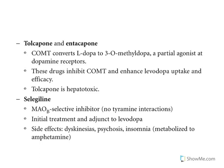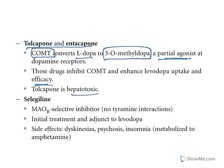Tolcapone and entacapone are both catechol-O-methyltransferase inhibitors. Levodopa can be converted to 3-O-methyldopa, which is a partial agonist with low efficacy. So these enzymes must be inhibited to prevent reducing the efficacy of levodopa. Note that tolcapone is a hepatotoxic drug.